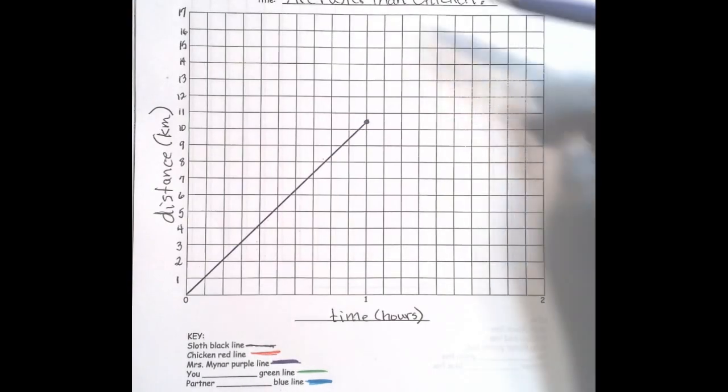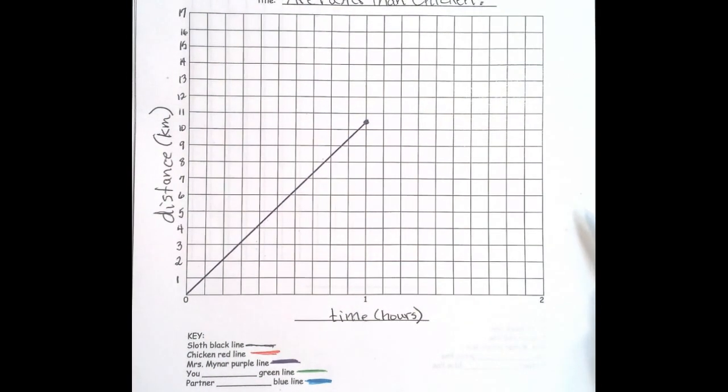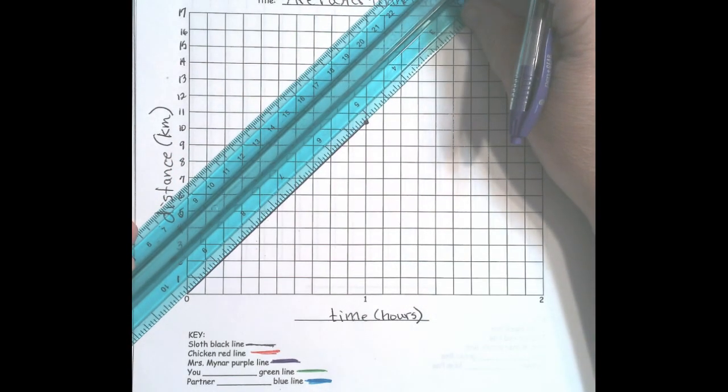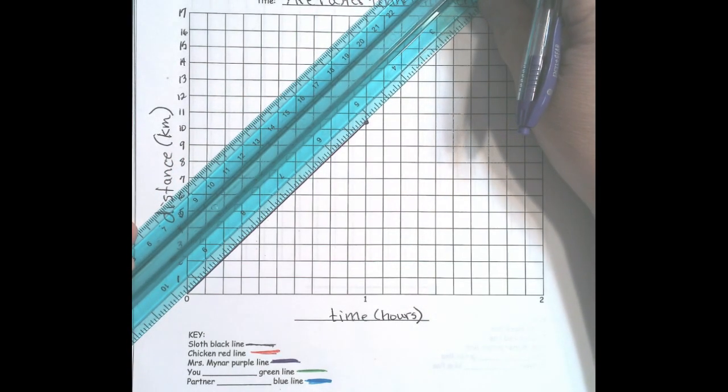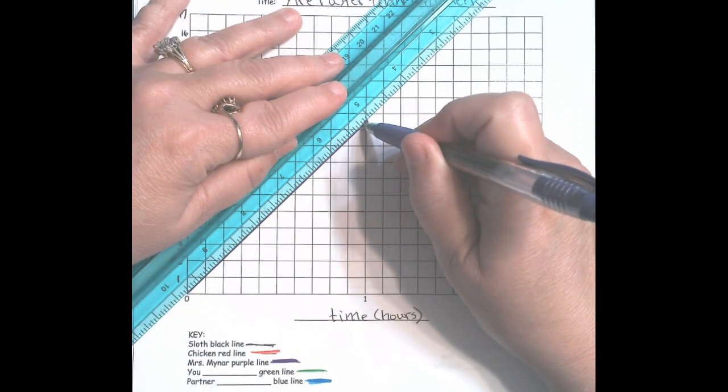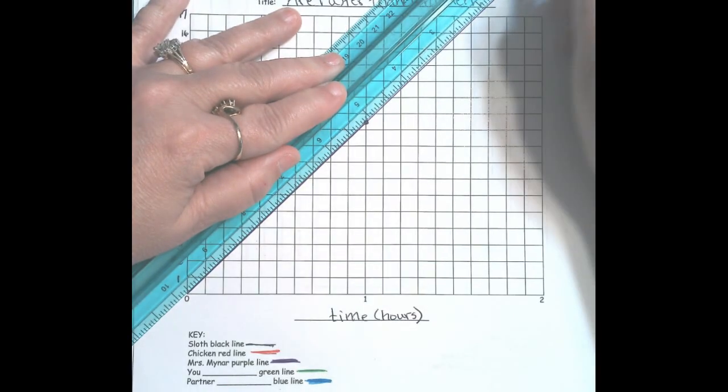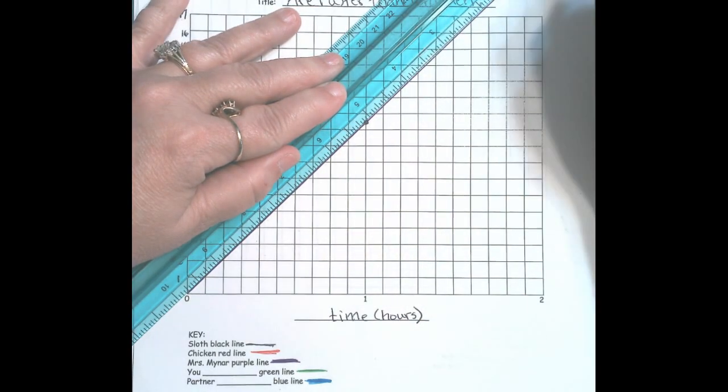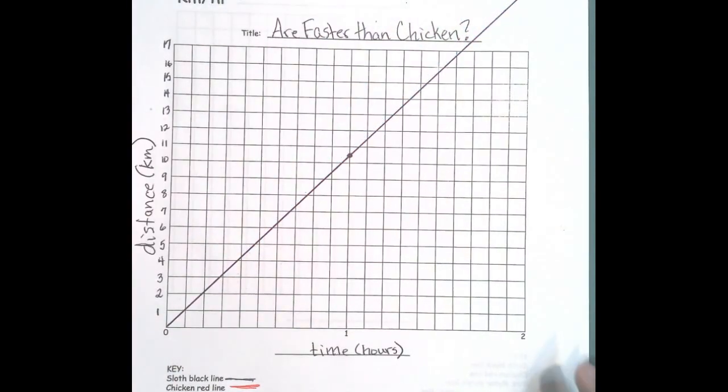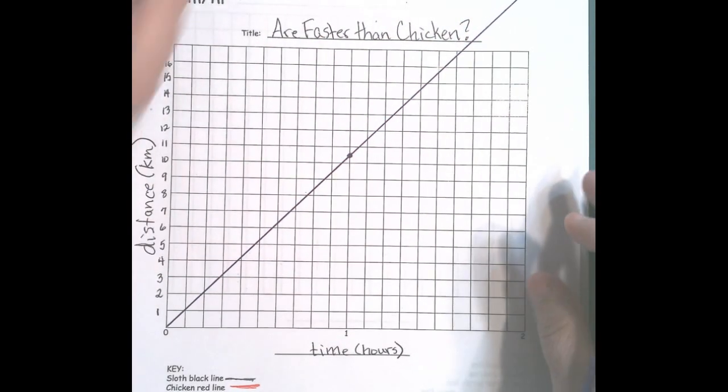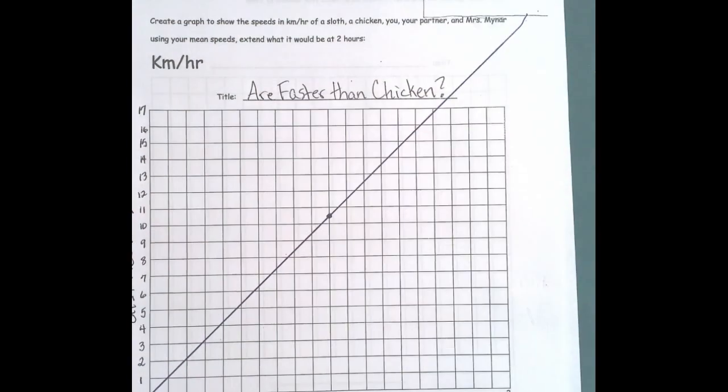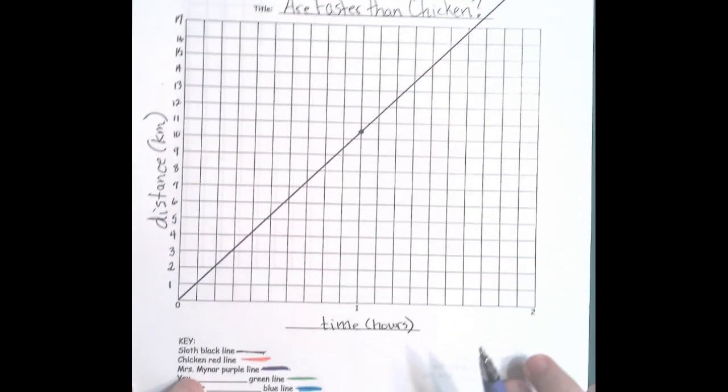If this line were to continue in a straight line, it would just continue to go way up there. That would be approximately somewhere up here - eventually this data point would be way up there at the two hour mark.